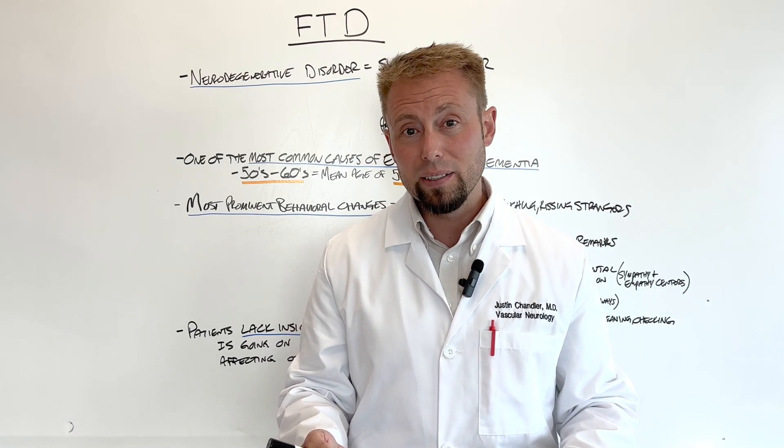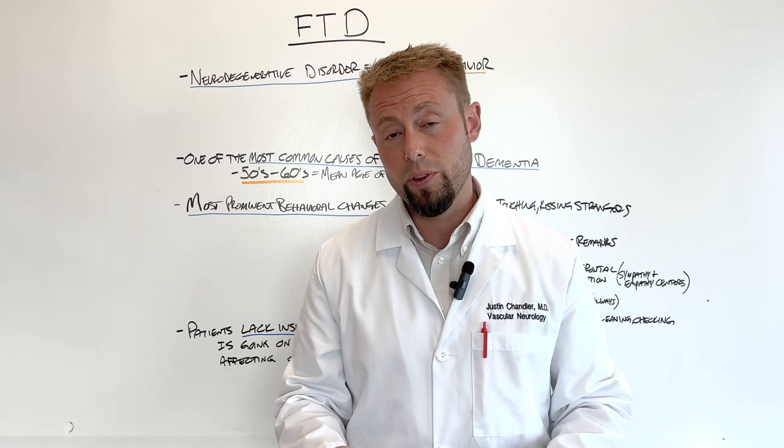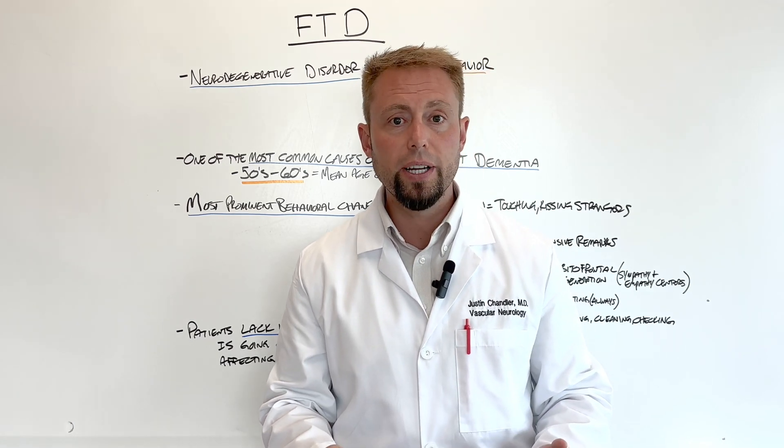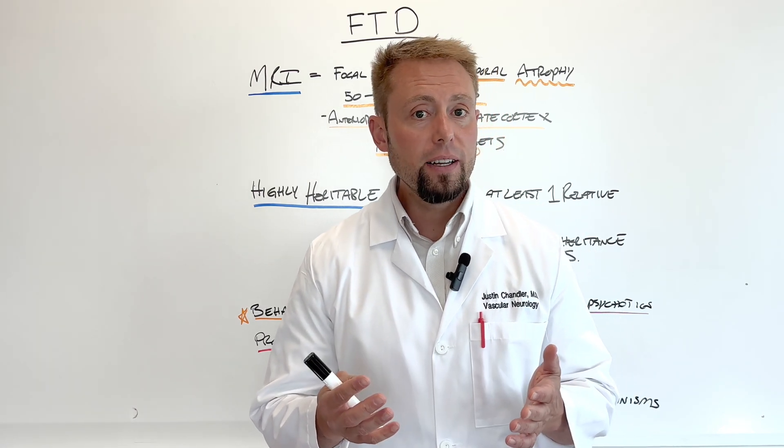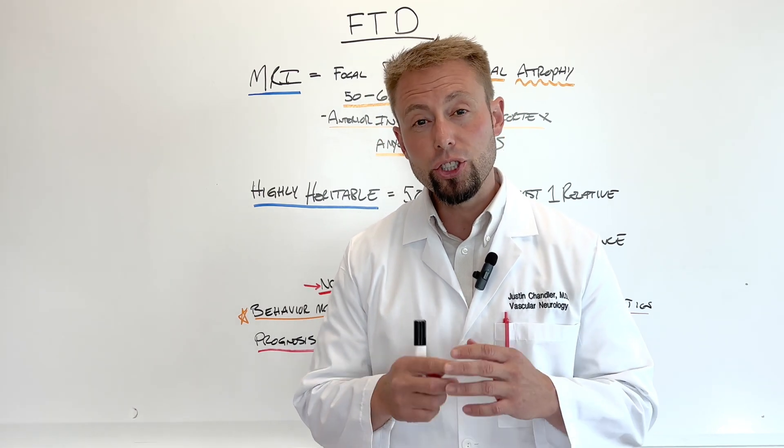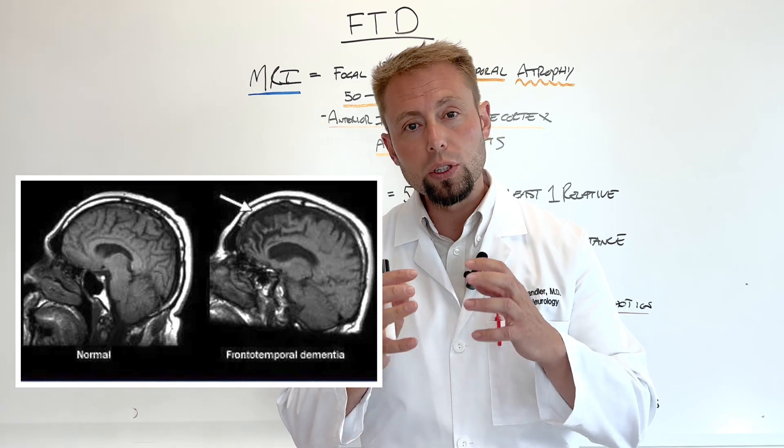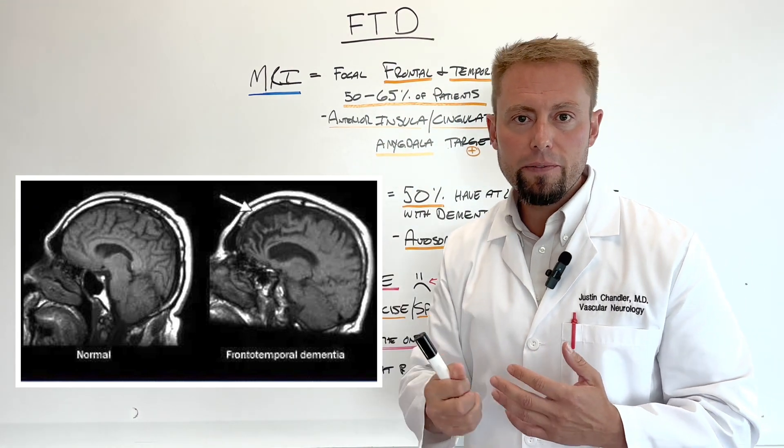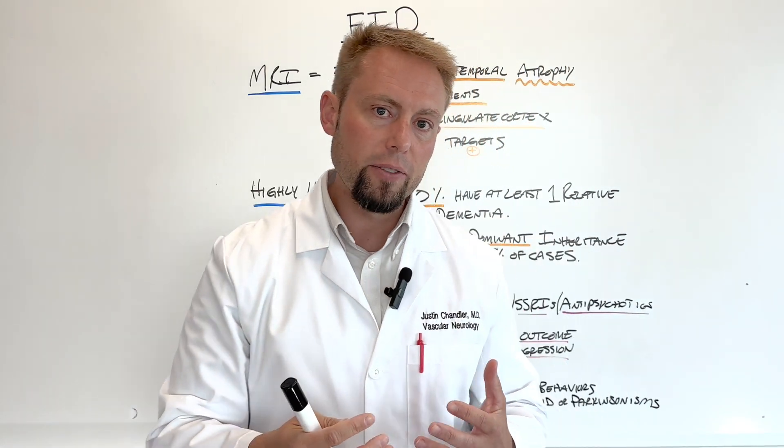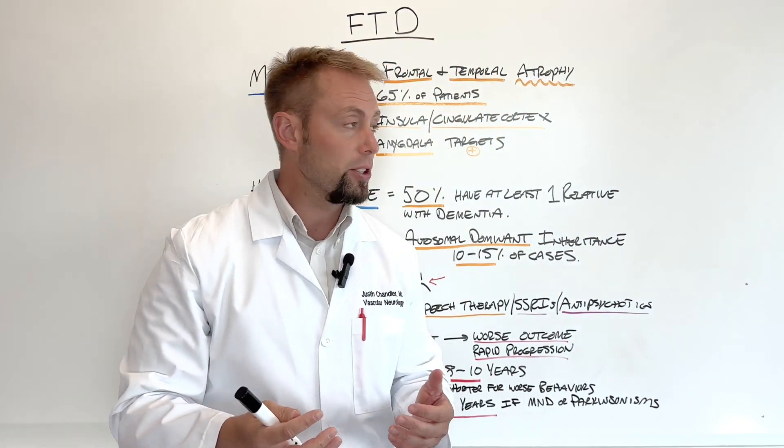That can make living with or helping someone with frontal temporal dementia incredibly frustrating. These areas of the brain that are affected in frontal temporal dementia show shrinking or loss of neurons, particularly on MRI scans.